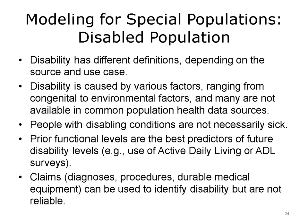The population with disabilities also requires extra attention when developing predictive models. Disability has different definitions depending on the source and use case, and models are often not well calibrated to predict the same outcome. Disability is caused by various factors ranging from congenital to environmental factors, many of which are not available in common population health data sources. People with disabling conditions are not necessarily sick, so defining disability as risk is not always straightforward. Prior functional levels are the best predictors of future disability levels, such as the use of activities of daily living (ADL) surveys; however, such survey information is limited across large population data warehouses. Insurance claims data include useful information to identify disability, such as diagnosis, procedures, and durable medical equipment data, but none of them are fully reliable.